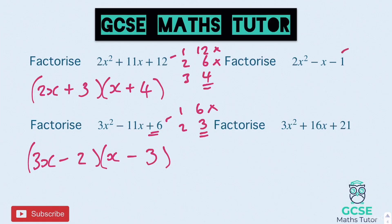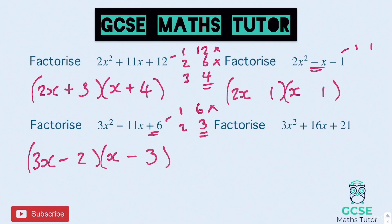Onto the top right: the only factors of 1 are 1 and 1, so this is quite a nice one. We're going to have 2x and x, and because our only options are 1 and 1 we can stick the 1s in straight away — we just need to get the symbols right. One of them is going to double, so it's 2 and 1. How do I make negative 1 in the middle using 2 and 1? I want positive 1 take away 2, so I want the 1 to double to make 2. So positive 1 in one bracket, minus 1 in the other — that 1 doubles to make the negative 2.